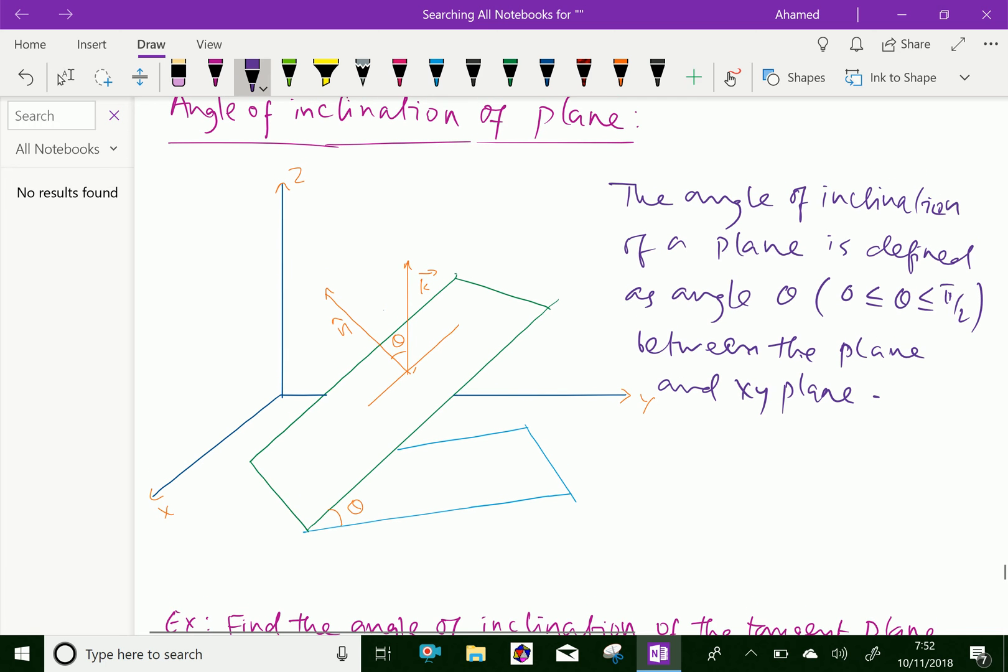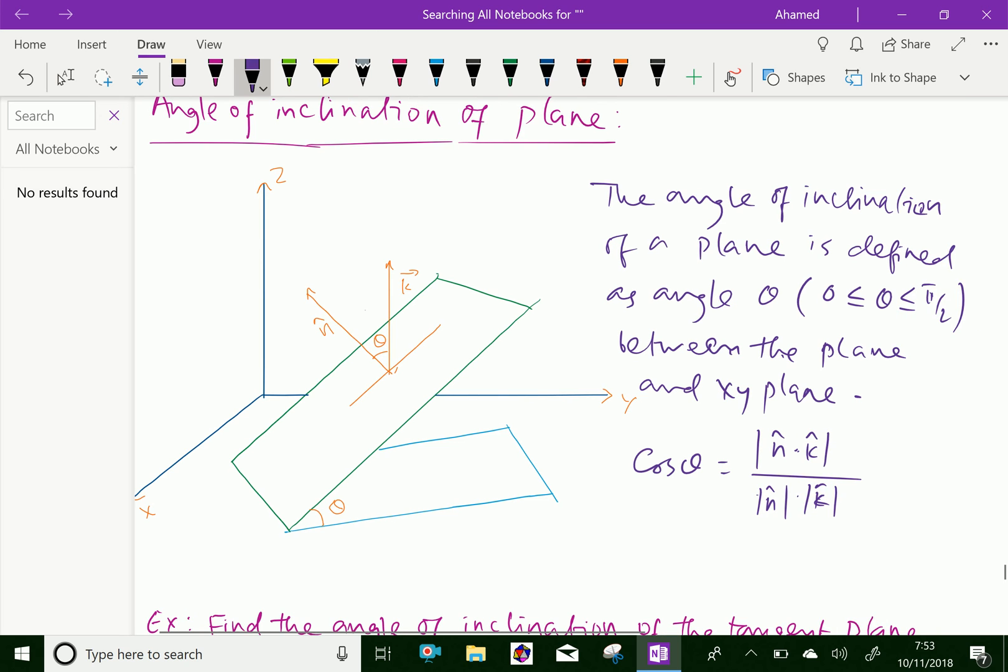Now, we can write the formula for this angle of inclination in terms of cos theta equal modulus of N vector dot product K vector over modulus of N vector. Because K vector, modulus of K vector is 1, because it's unit vector, so this is a cos theta value.